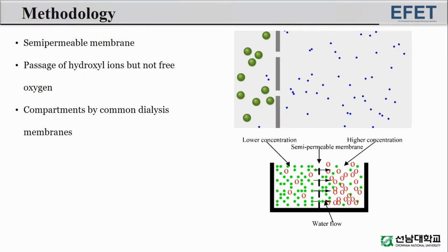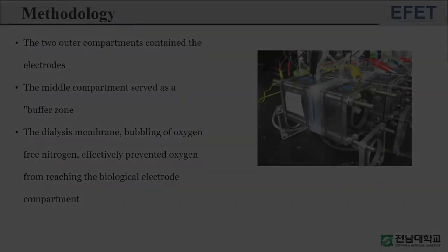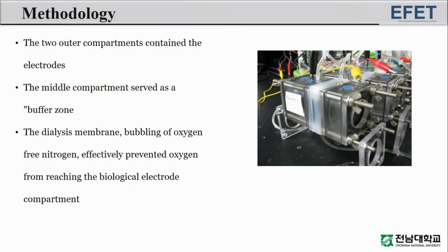The electrons transferred would react at the oxygen electrode to produce hydroxyl ions. These migrate through a semi-permeable membrane to react with hydrogen ions, completing the cyclic reaction. The crucial link in the series of reactions is the substitution of a wire for the ordinary electron transport mechanism. A prime consideration is the selection of a semi-permeable membrane which would separate the biological electrode from the oxygen electrode. This type of membrane would allow passage of hydroxyl ions but not free oxygen. The system used was divided into three compartments by common dialysis membranes, with bubbling of oxygen-free nitrogen effectively preventing oxygen from reaching the biological electrode compartment.